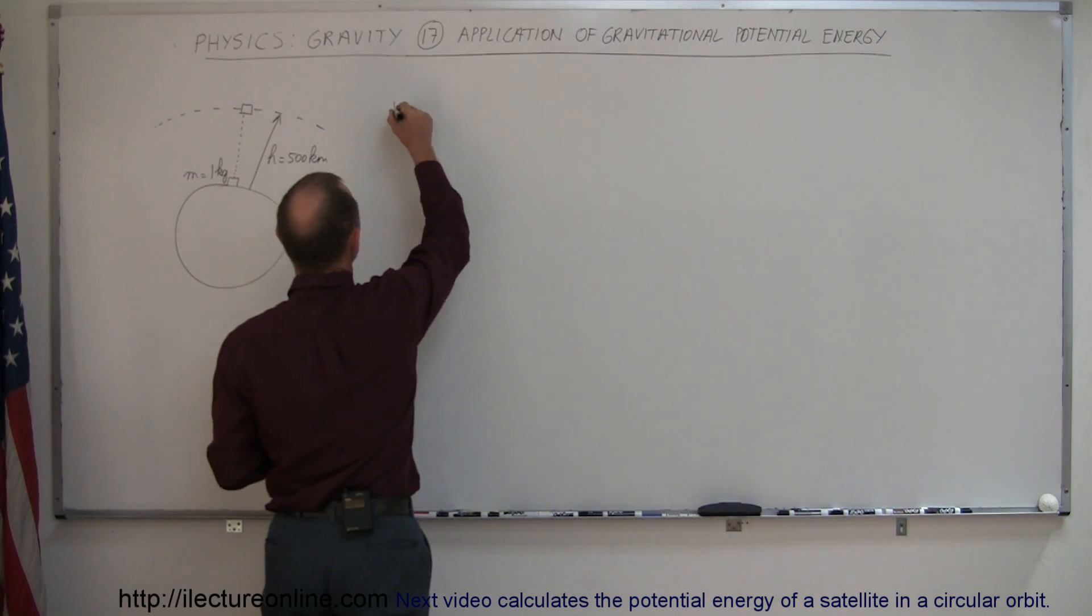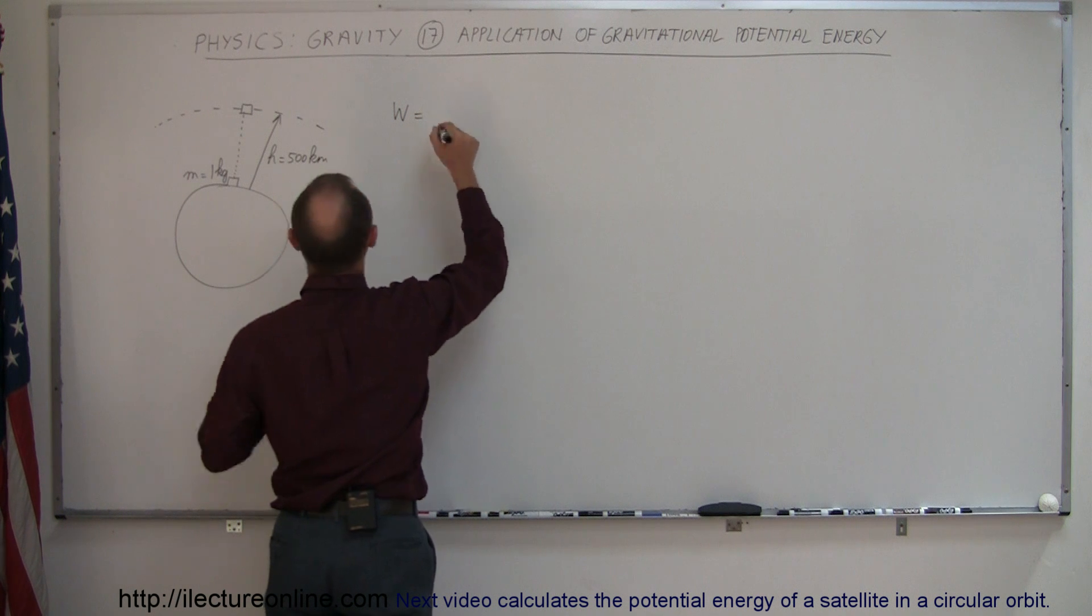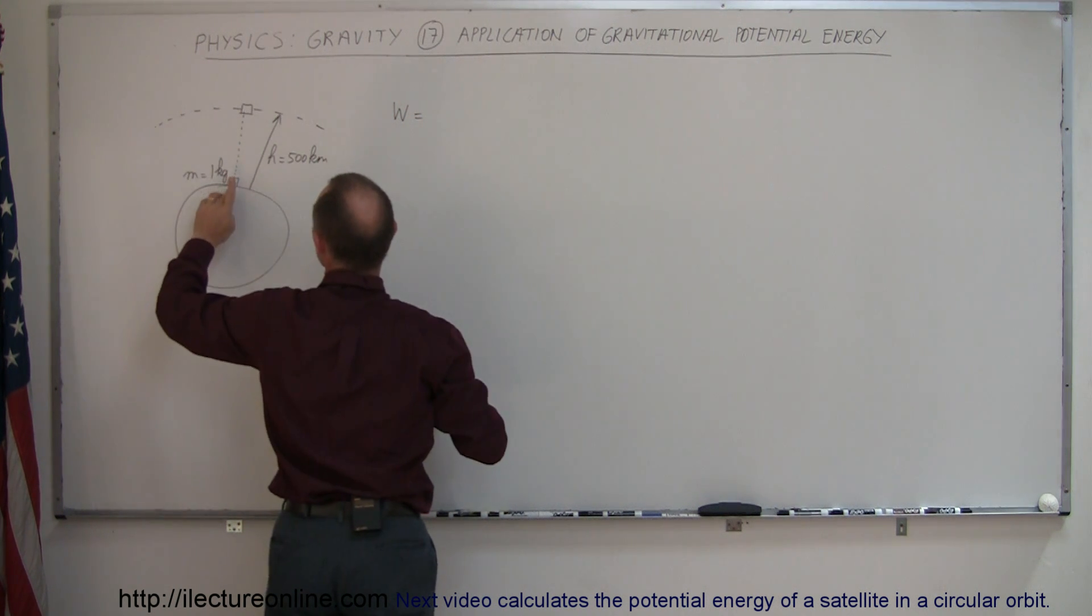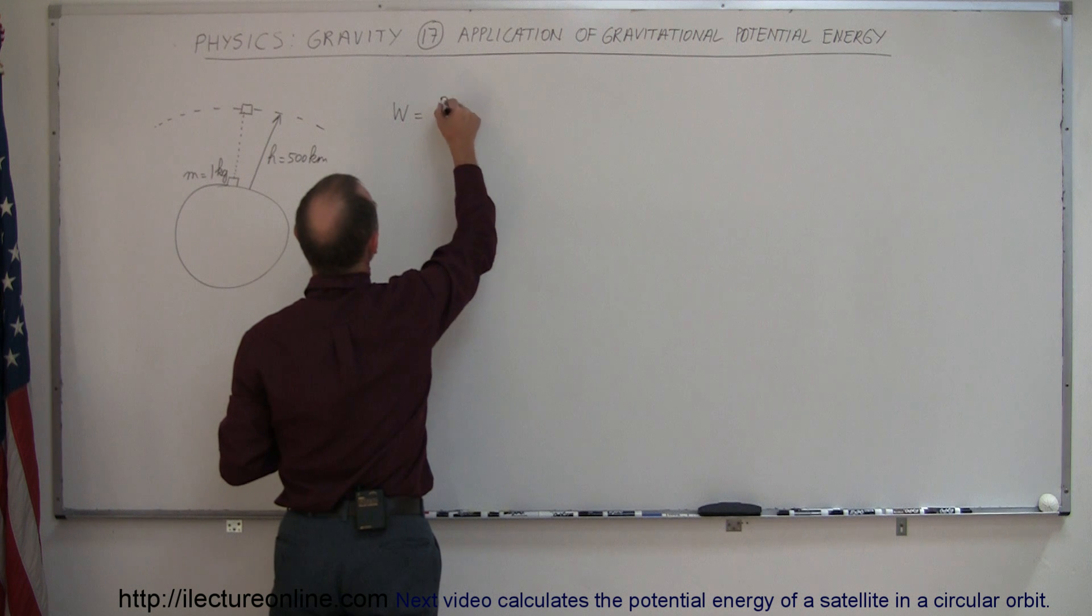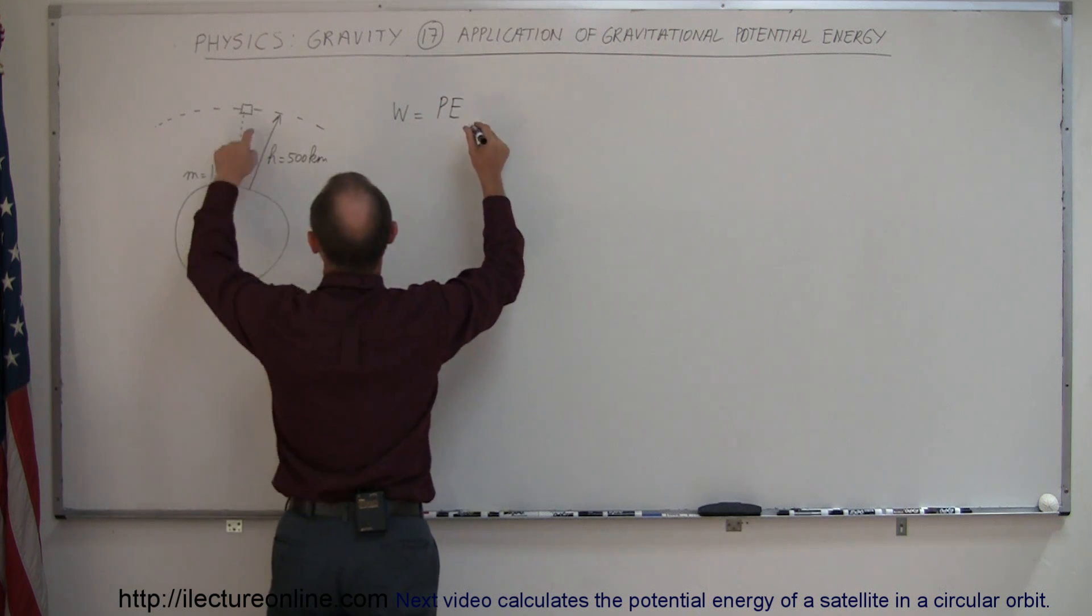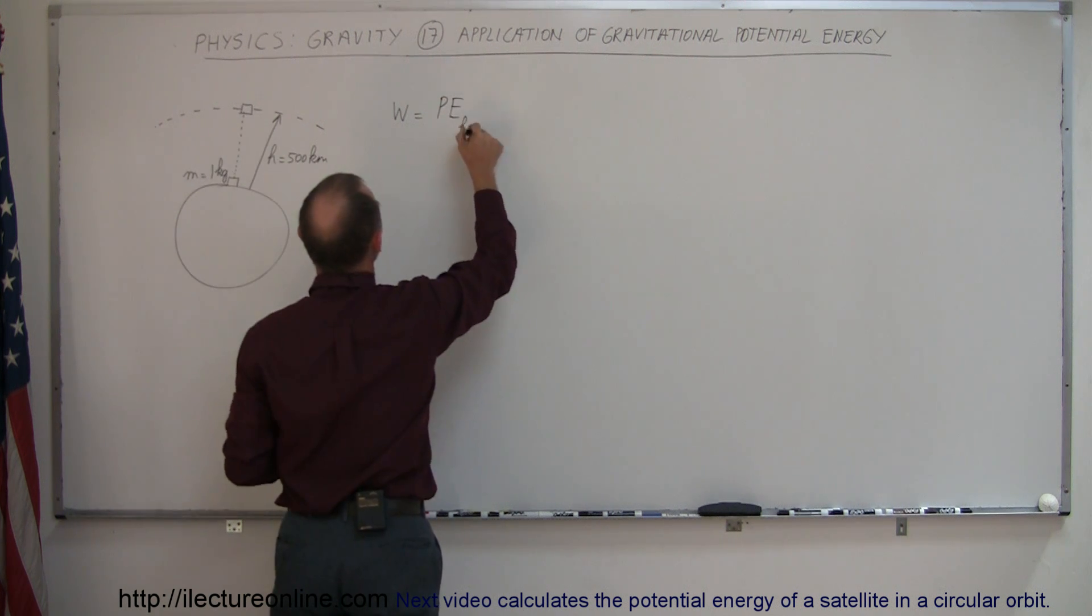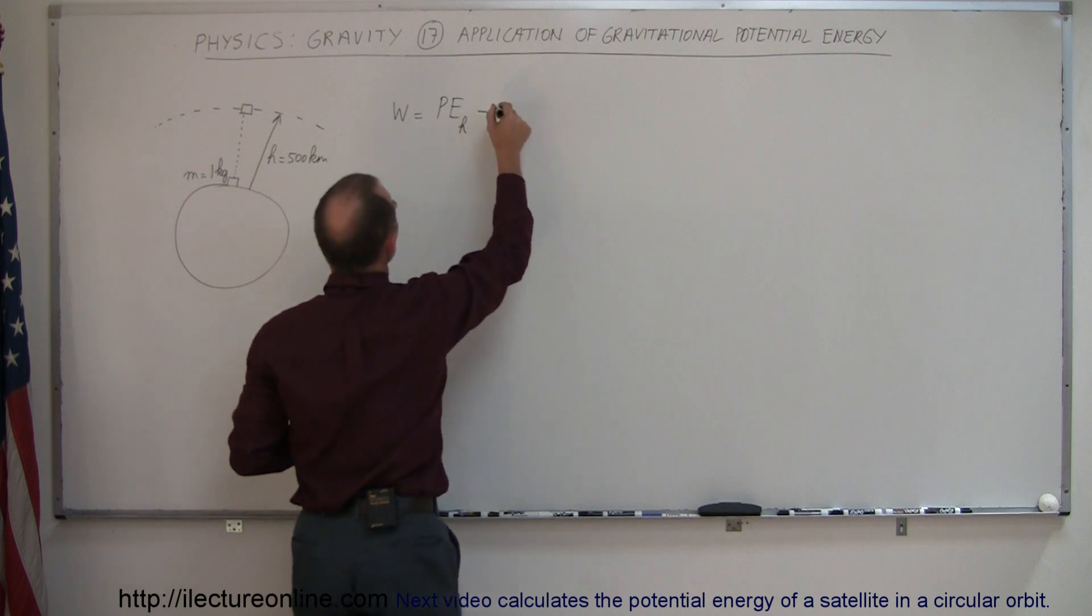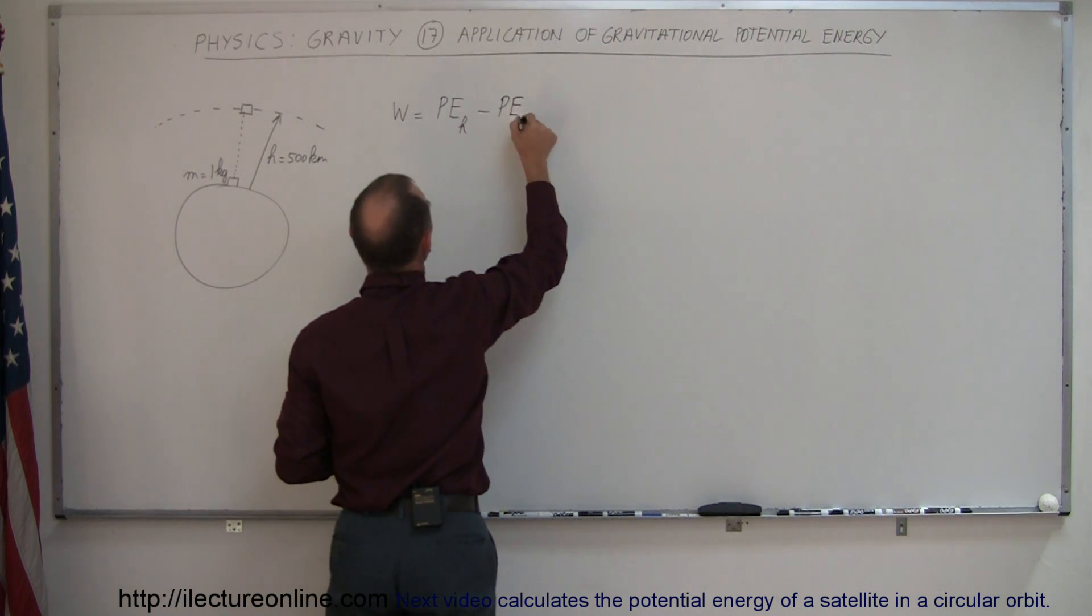So the work done to do that is equal to the energy that it would have over there minus the energy that it has down here. So it's equal to the potential energy at the orbit, at the height, minus the potential energy it has on the surface of the Earth.